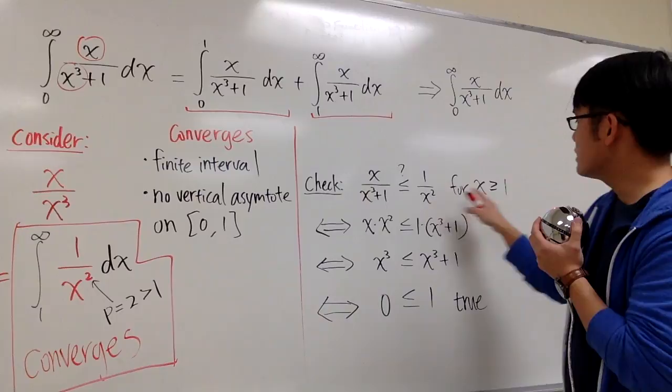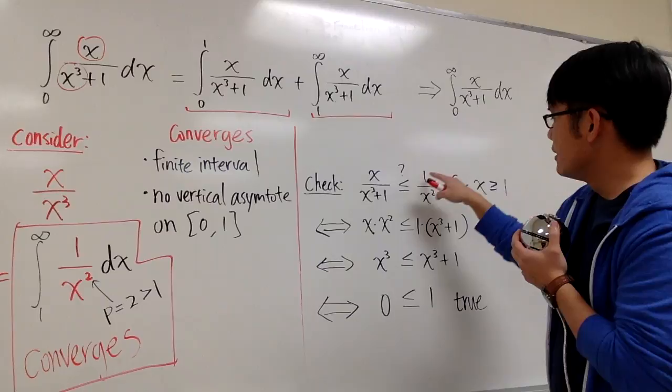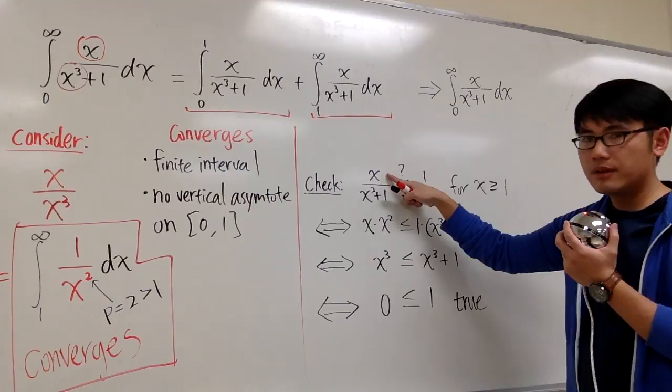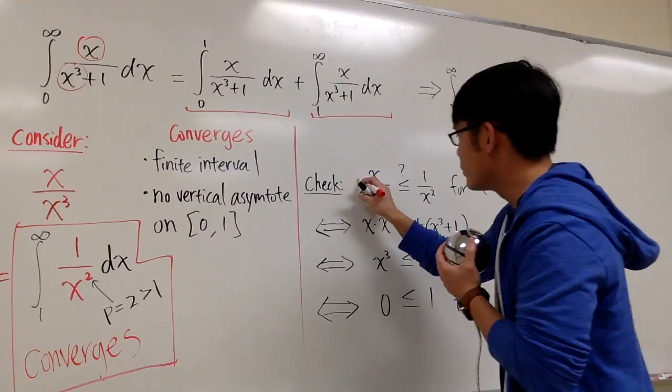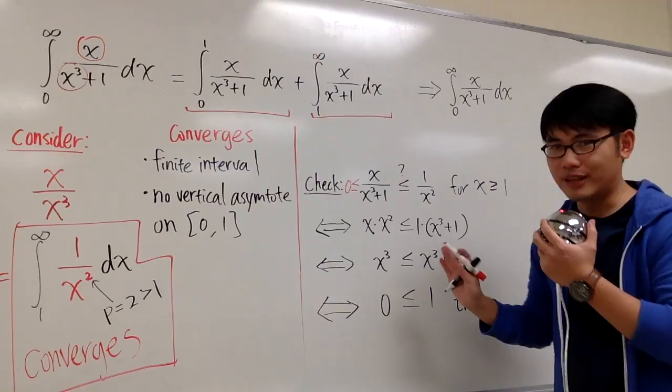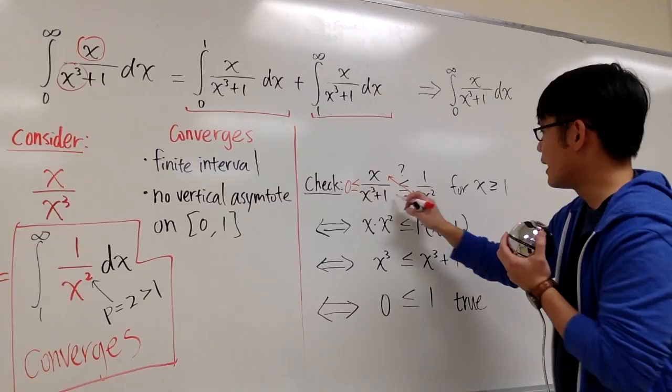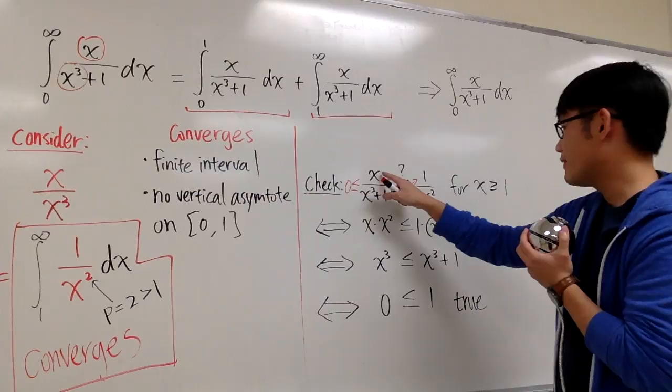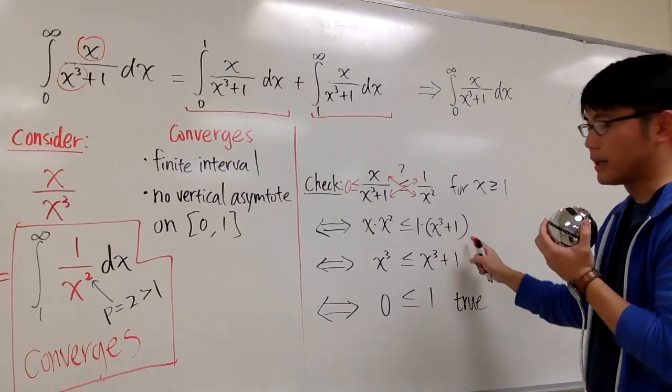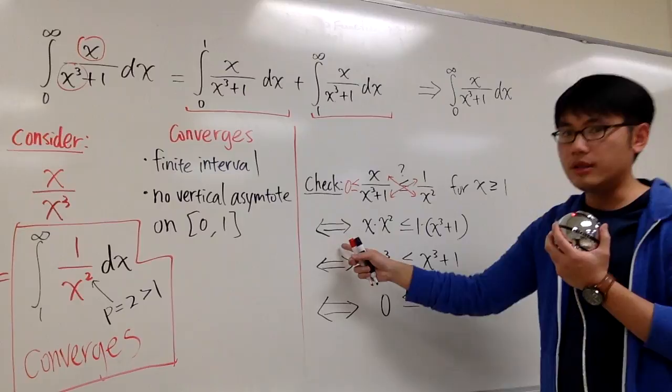We also confirm that because x is greater than or equal to 1, all these quantities are positive — x on top is positive, x to the third power is positive, and plus 1 is also positive. Since everything is positive, to check this inequality we can cross-multiply without switching the inequality sign.